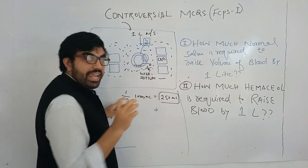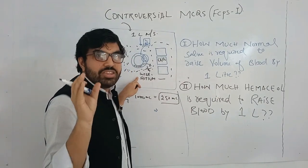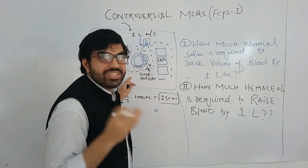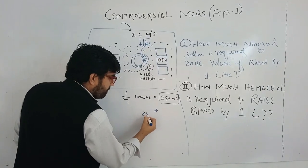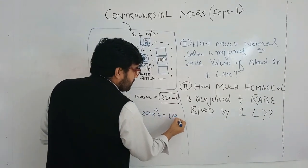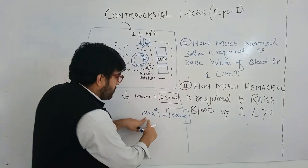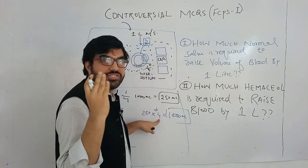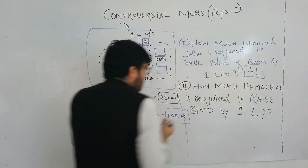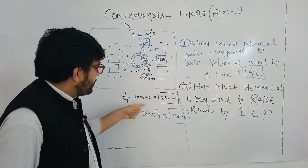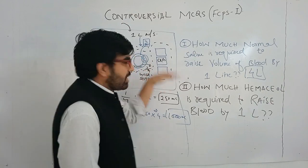One-fourth of 1000 ml is 250 ml. So if you give one liter of normal saline, the blood volume increases by only 250 ml, and the interstitium volume increases by three-fourths. If one liter increases blood volume by 250 ml, then to increase blood volume by one full liter you need four liters of normal saline. The key concept: one-fourth stays intravascular, three-fourths goes to the interstitium.